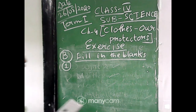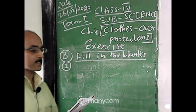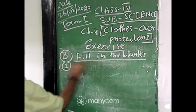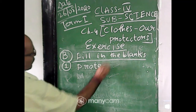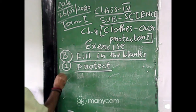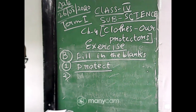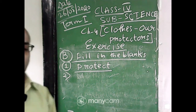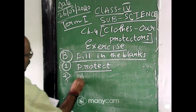Number one: clothes ___ us from cold rain and dust. The answer is protect — clothes protect us. Number two: we wear ___ in the rainy season. The answer is raincoat — we wear raincoat in the rainy season.